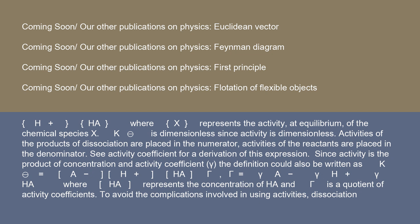Since activity is the product of concentration and activity coefficient γ, the definition could also be written as K° = ([A⁻][H⁺]/[HA]) × (γ_A⁻ γ_H⁺/γ_HA), where [HA] represents the concentration of HA, and γ is a quotient of activity coefficients.